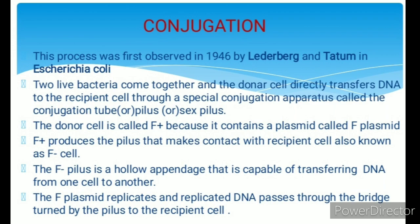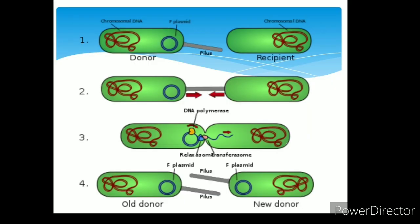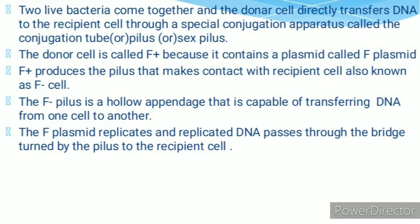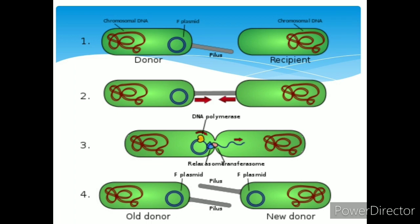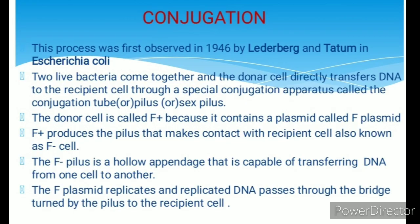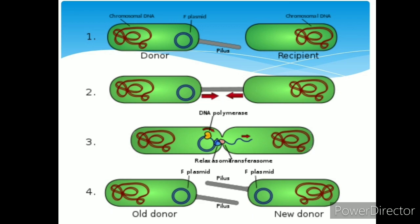Conjugation was first observed in 1946 by Lederberg and Tatum in E. coli. In this process, two live bacteria come together; one is called the donor cell, which directly transfers DNA material to the recipient cell. A special apparatus called the conjugation tube or pilus or sex pilus is required for this transfer. The donor cell is called F-plus because it contains a plasmid called F-plasmid. F-plus produces the pilus that makes contact with the recipient cell, also known as the F-minus cell. The F-pilus is a hollow appendage capable of transferring DNA from one cell to another. The F-plasmid replicates and the replicated DNA passes through the bridge formed by the pilus to the recipient cell, completing conjugation.